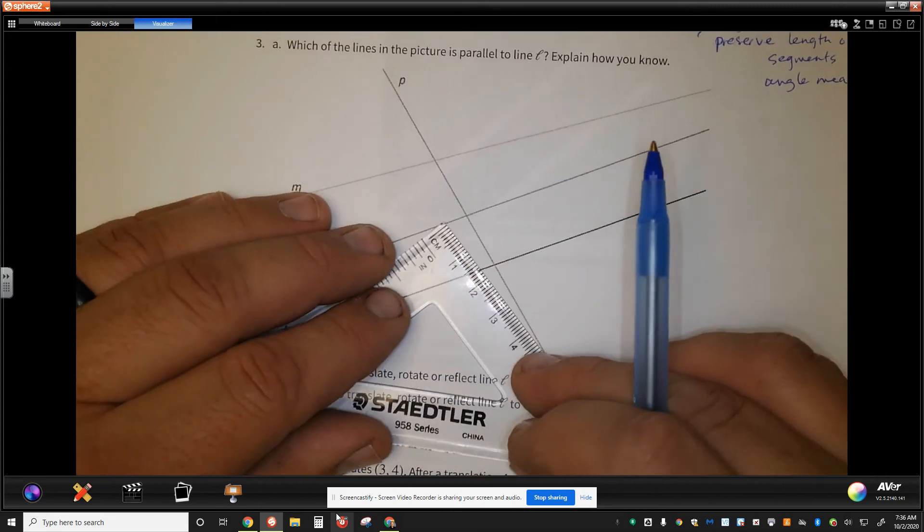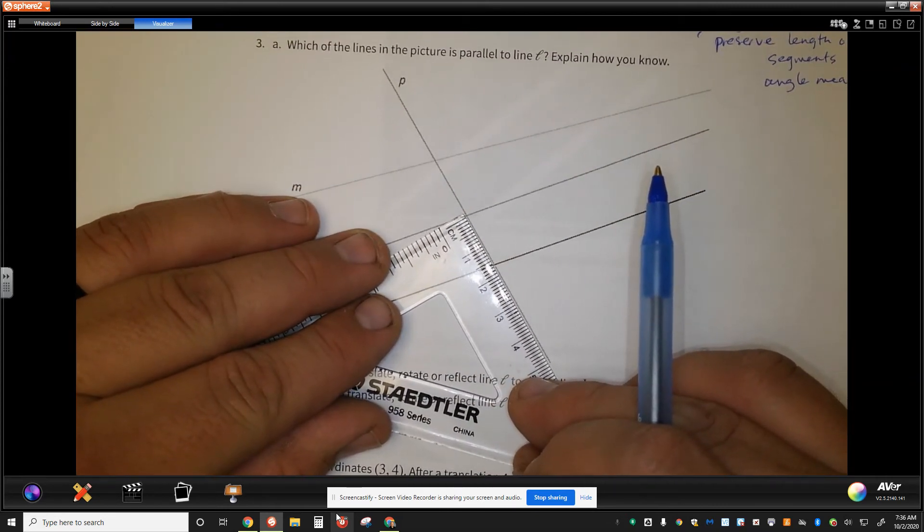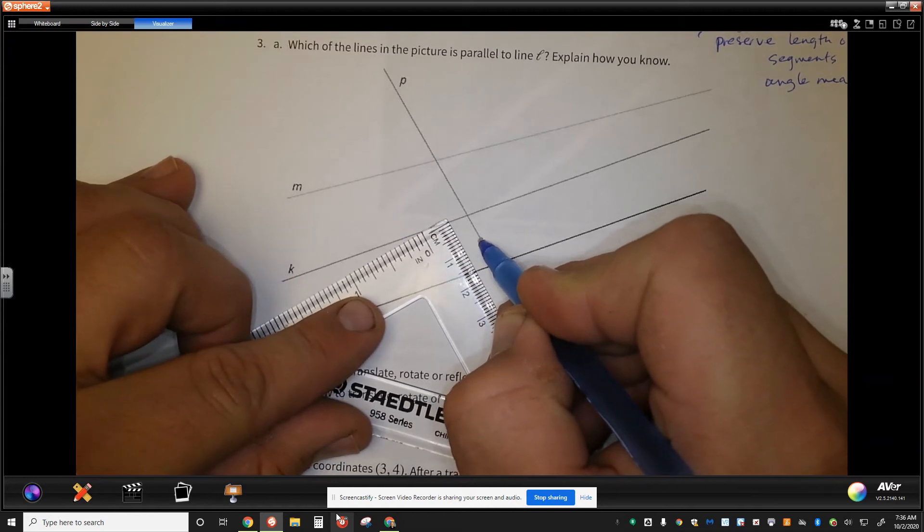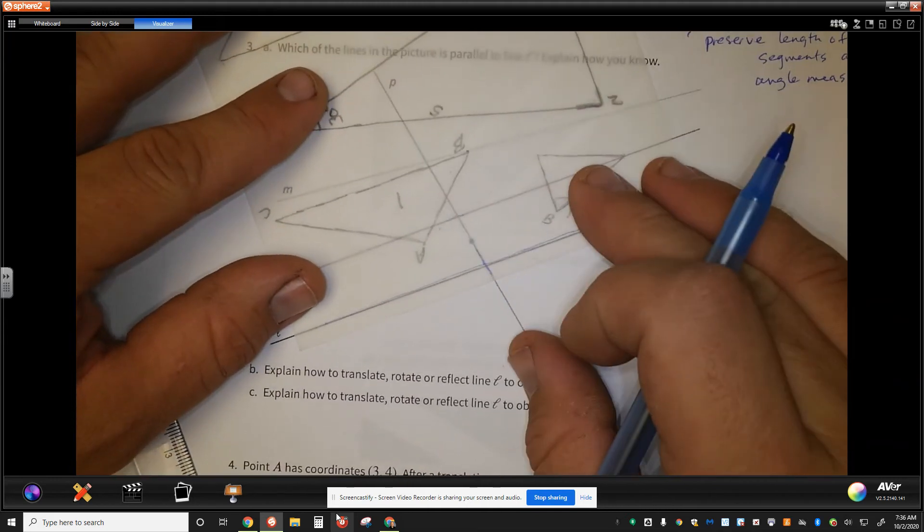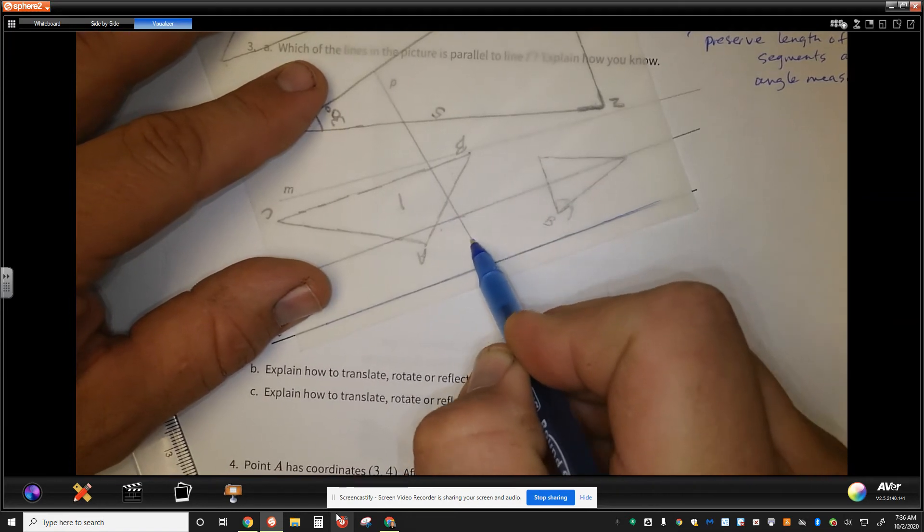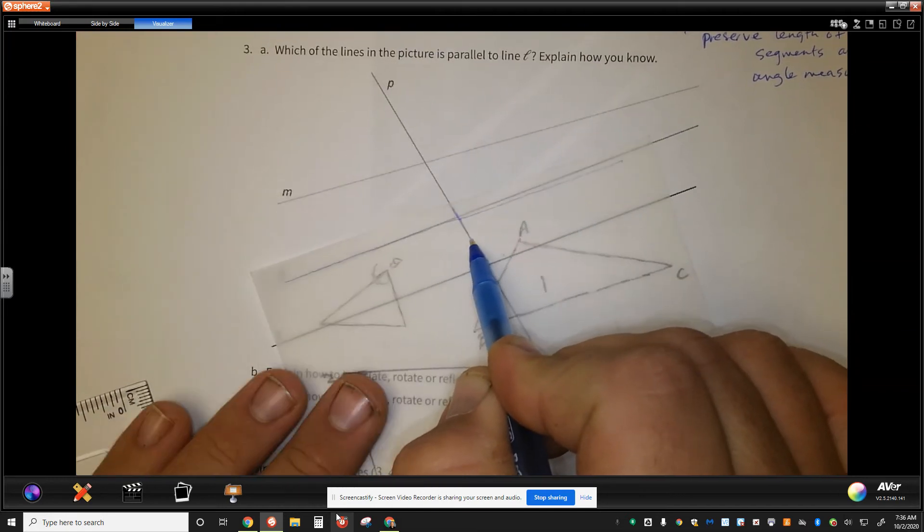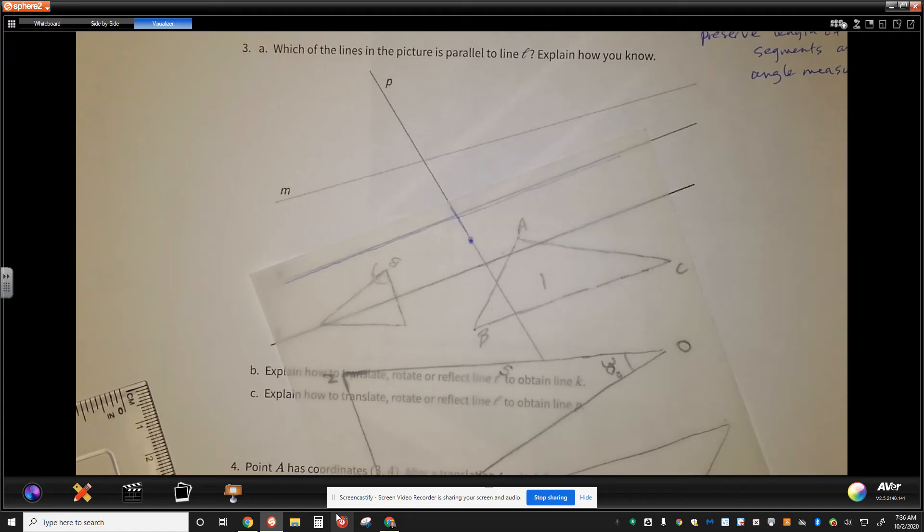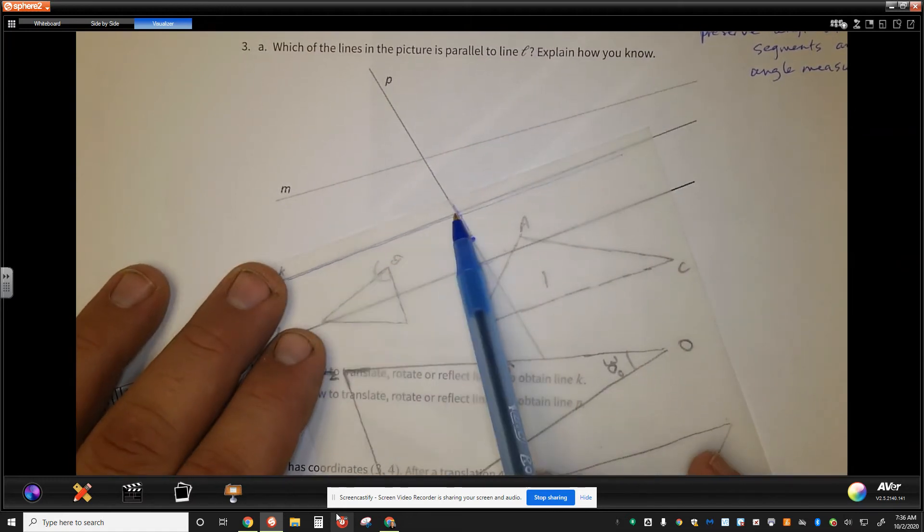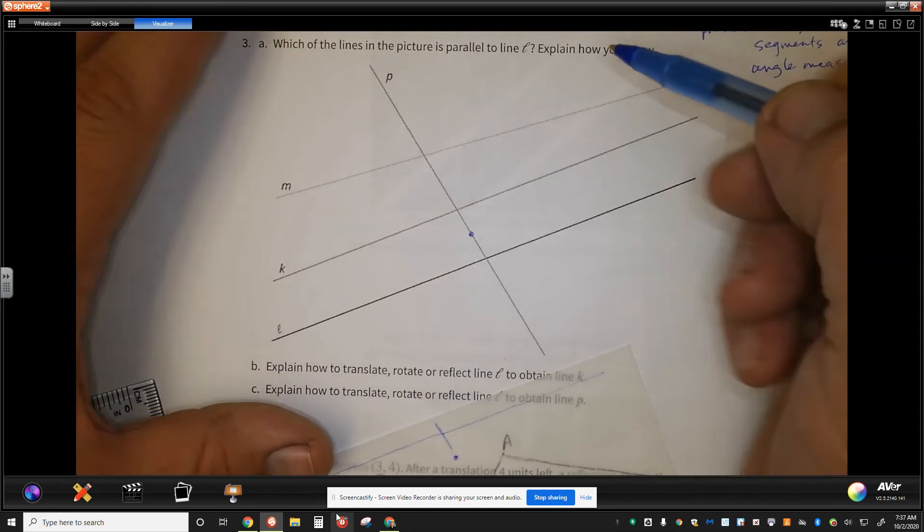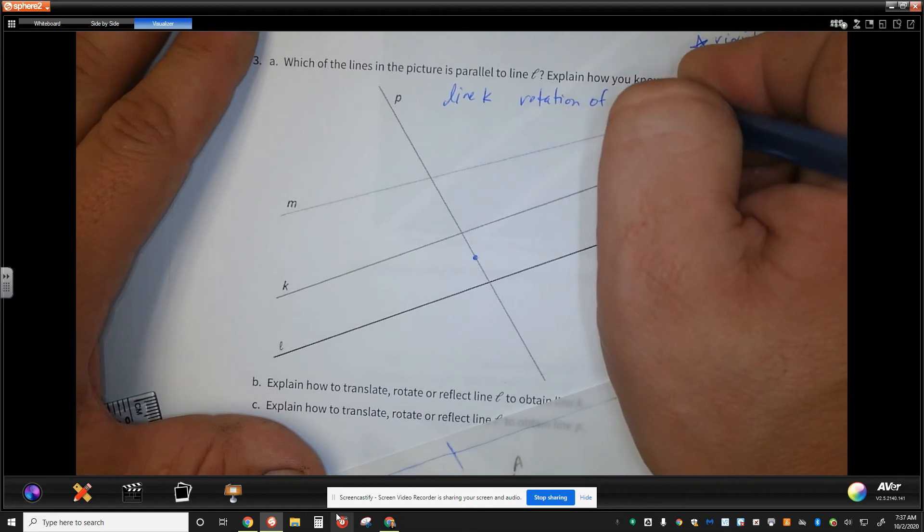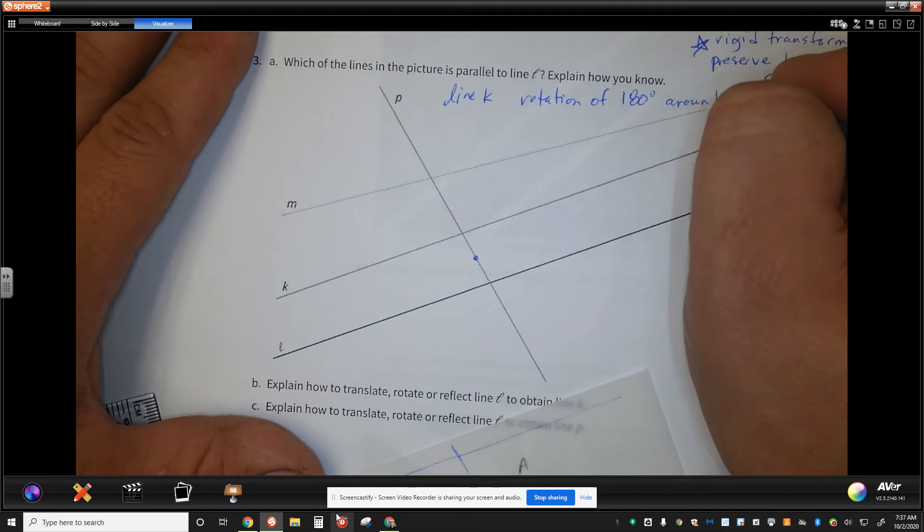But in order to do that, I need to find a midpoint between the two figures. I see 1.6 centimeters. So, halfway between there will be 0.8. We're going to put a little point right there, and we're going to rotate 180 degrees. If I rotate 180 degrees around this point, around the midpoint, then these two lines should, or if they are parallel, then I see that relationship and know, oh my goodness, there it is. Explain how to translate, rotate, right?